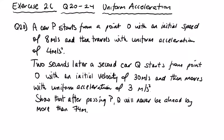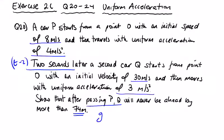Question 20, same as question 19 in the previous video. A car starts from point P with initial speed of 8 and uniform acceleration of 4. Two seconds later, so that's T minus 2 for the second car, a car Q starts from point O with initial velocity 30 and uniform acceleration of 3. Show that after passing P, Q will never be ahead by more than 74 meters, so this is the greatest distance.